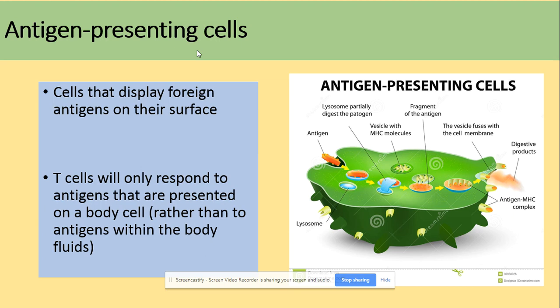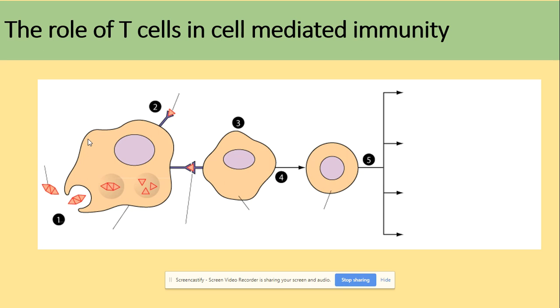An antigen-presenting cell is a cell that can display a foreign antigen on its surface. Any cells apart from T cells can be antigen-presenting cells — for example, phagocytes, macrophages, or B cells. T cells only respond to antigens that are presented on the surface of antigen-presenting body cells.